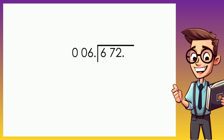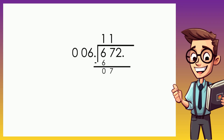Let's now start dividing. First, think of a digit that when multiplied by 6 gives 6. That number is 1, because 1 times 6 is 6. Then we subtract: 6 minus 6 is 0. Then we bring down the next digit, which is 7. We need a number that when multiplied by 6 is 7 or closer to 7 — that number is still 1, so 1 times 6 is 6. Then 7 minus 6 is 1.